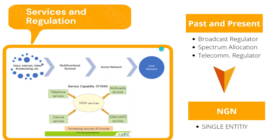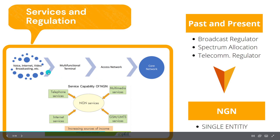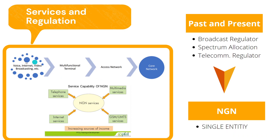Now let's talk about the services and regulation of the NGN. From the left side there are two images. The first one shows voice, internet, video, broadcasting, and so on, all going to the same access network. Basically, NGN made it possible to enjoy multiple things with only a single device — whether your smartphone, laptops, computers, and so on. Before accessing the access network, it goes first into the multi-function terminal, then to the access network, which is basically an access point or a BTS, and from there it goes to the core network, which is basically the server.